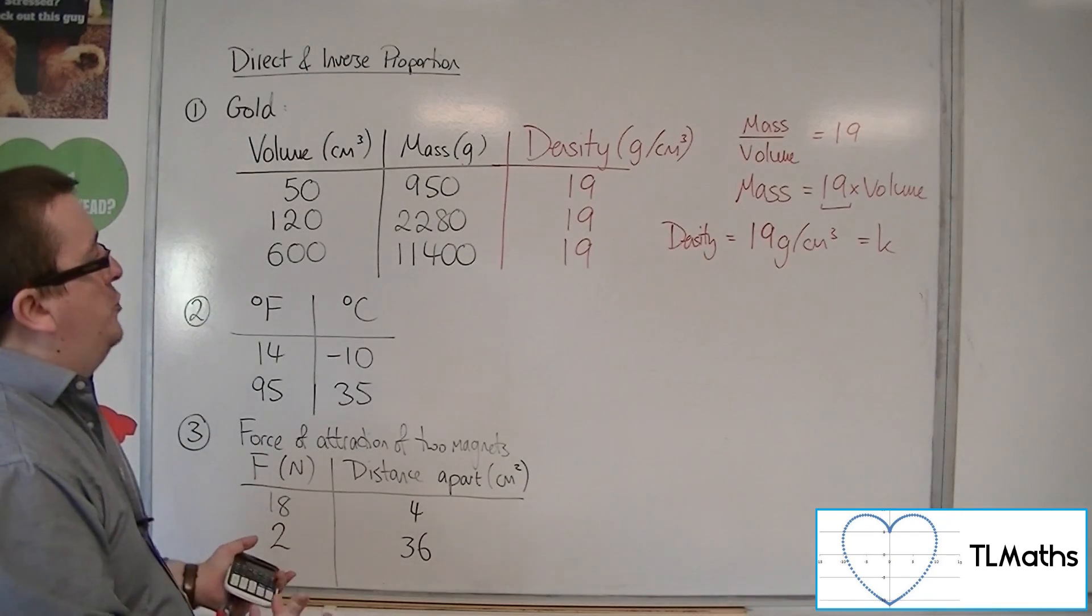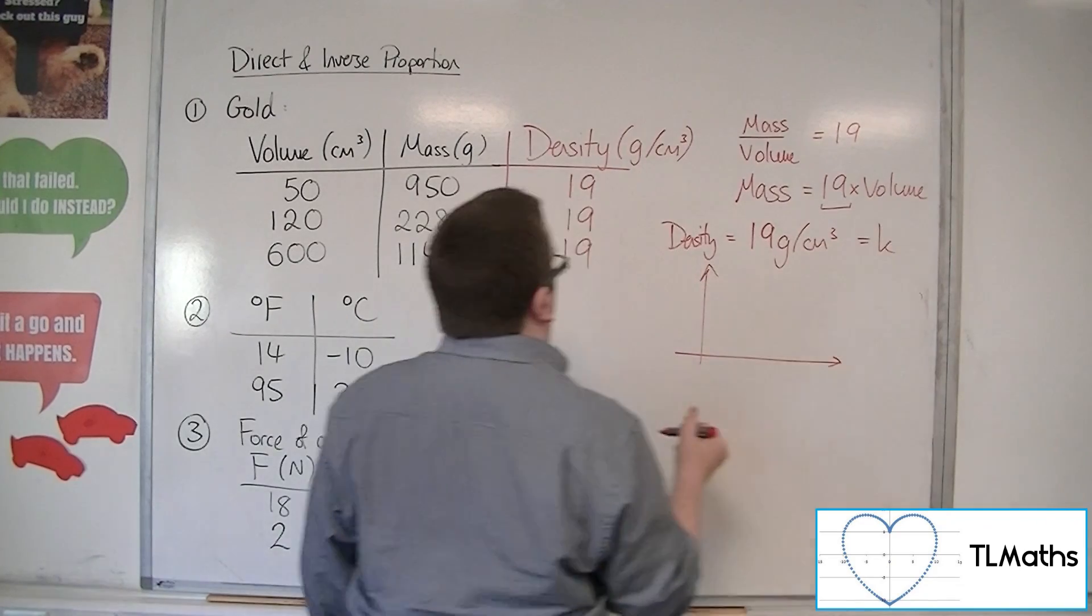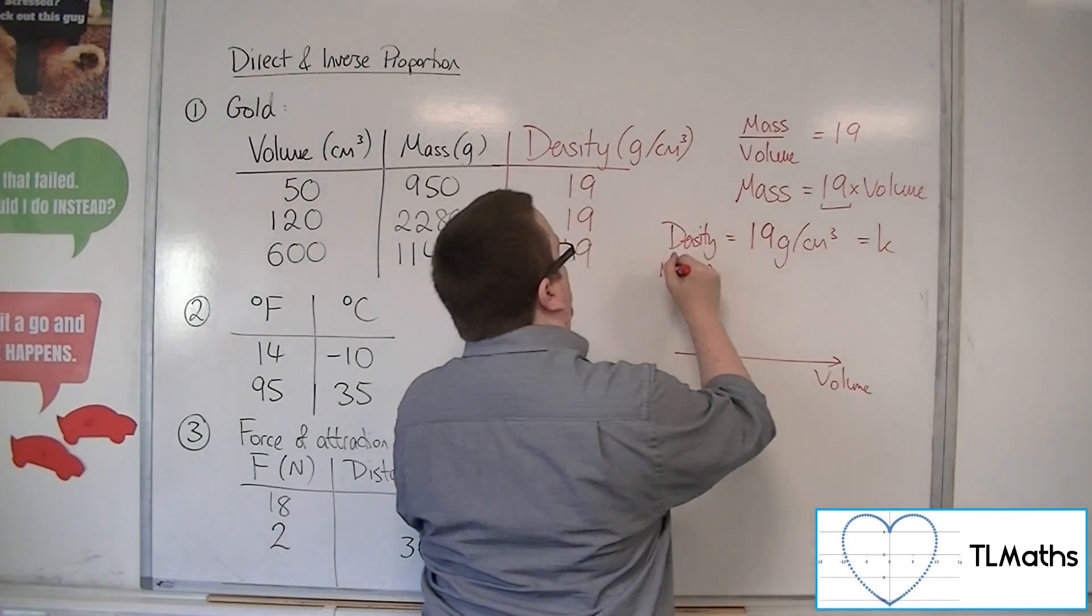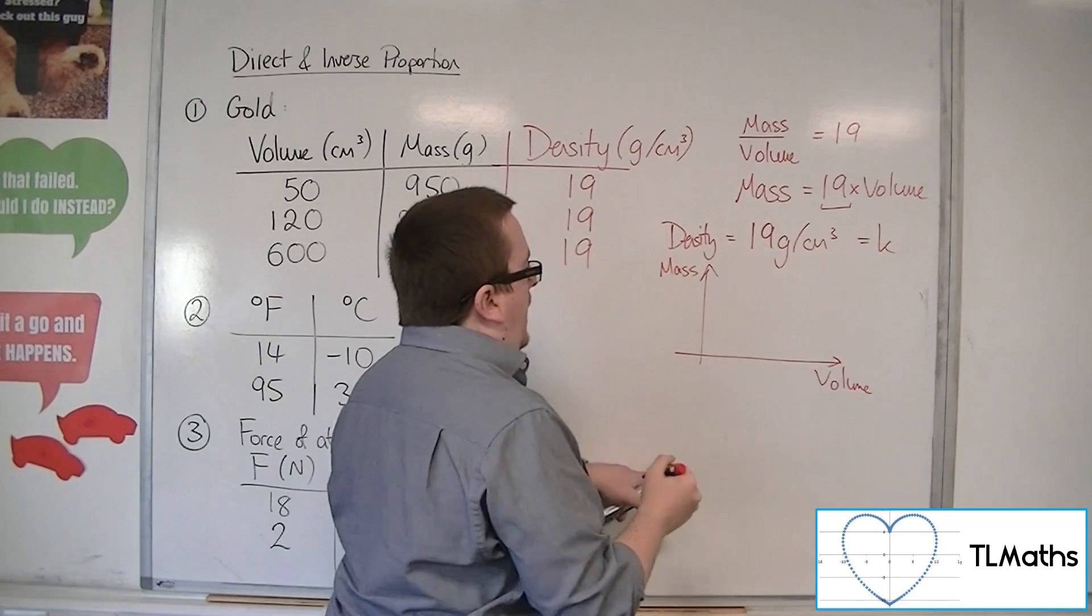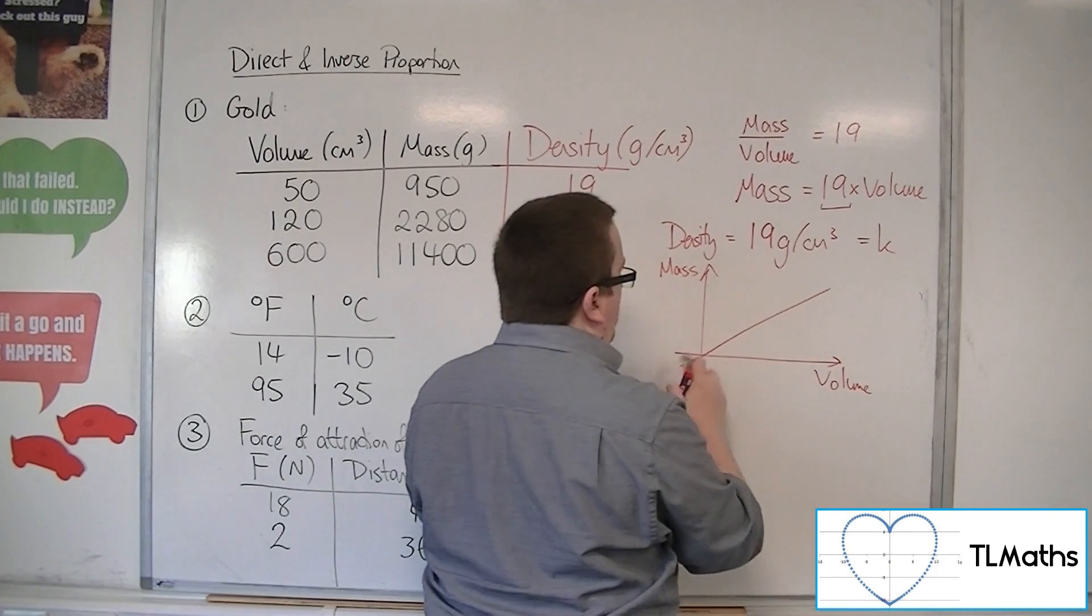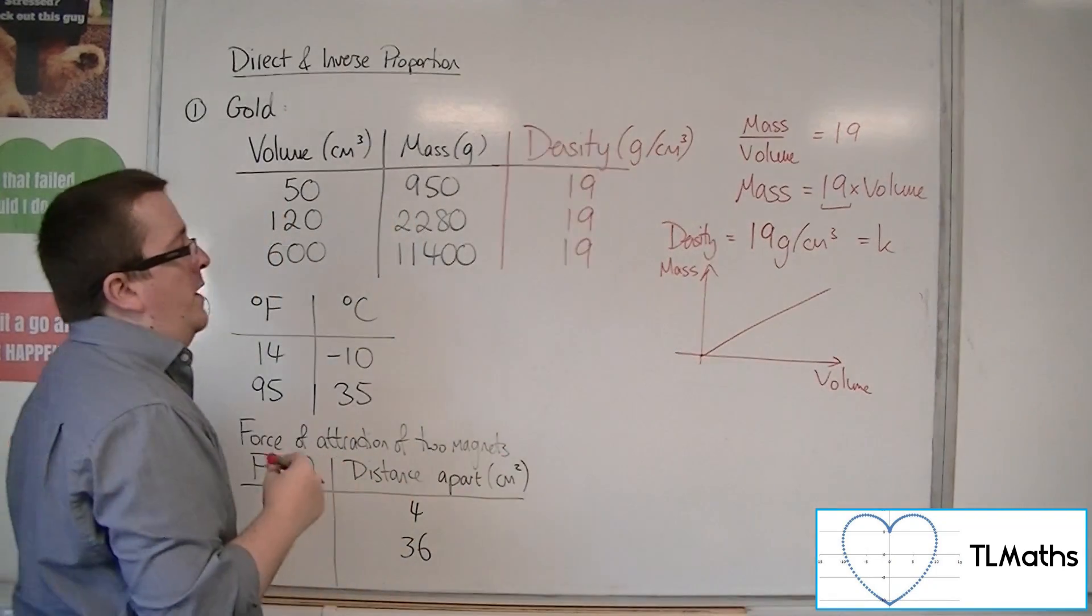So you would be able to draw a graph of volume against mass. And you should be able to plot a straight line. Well, it wouldn't be going into the negative region, so from the origin, straight through.